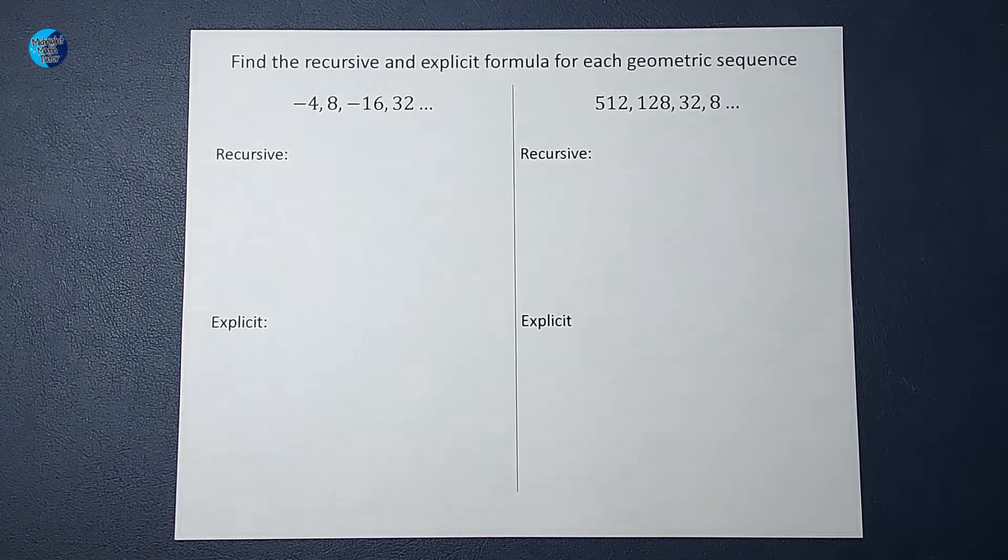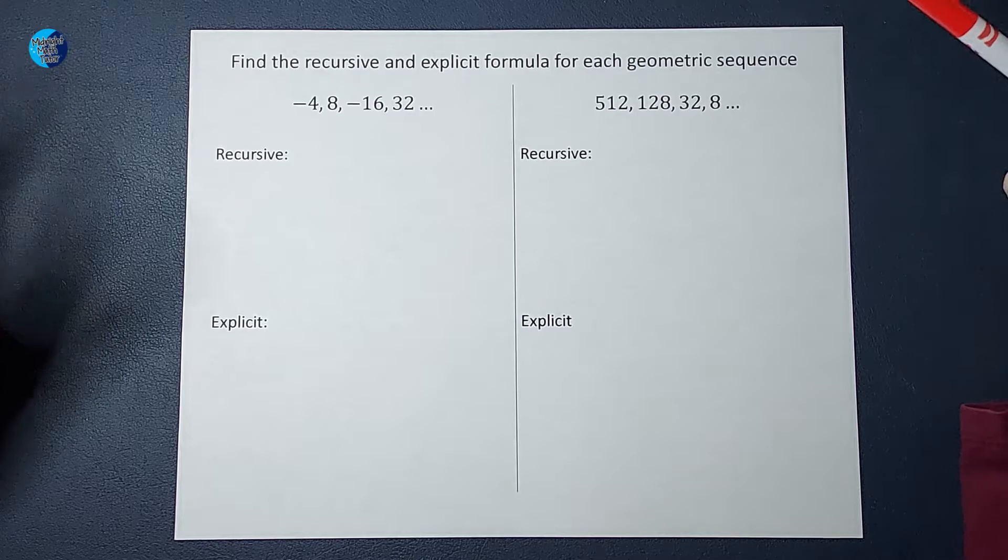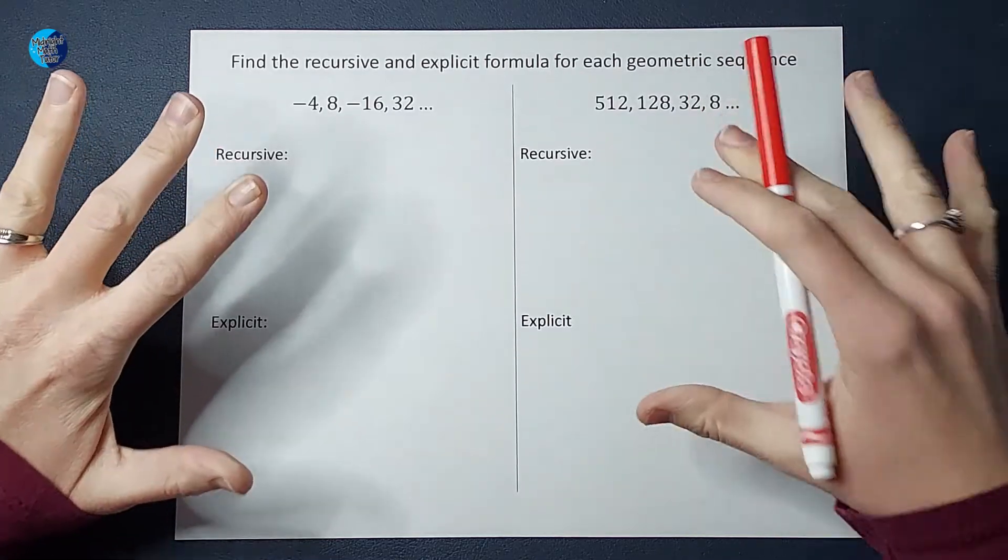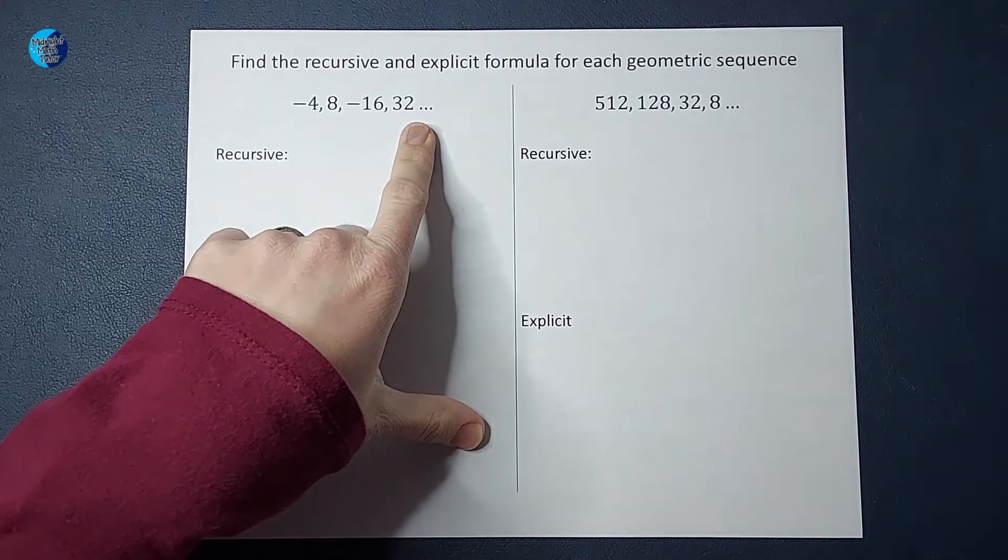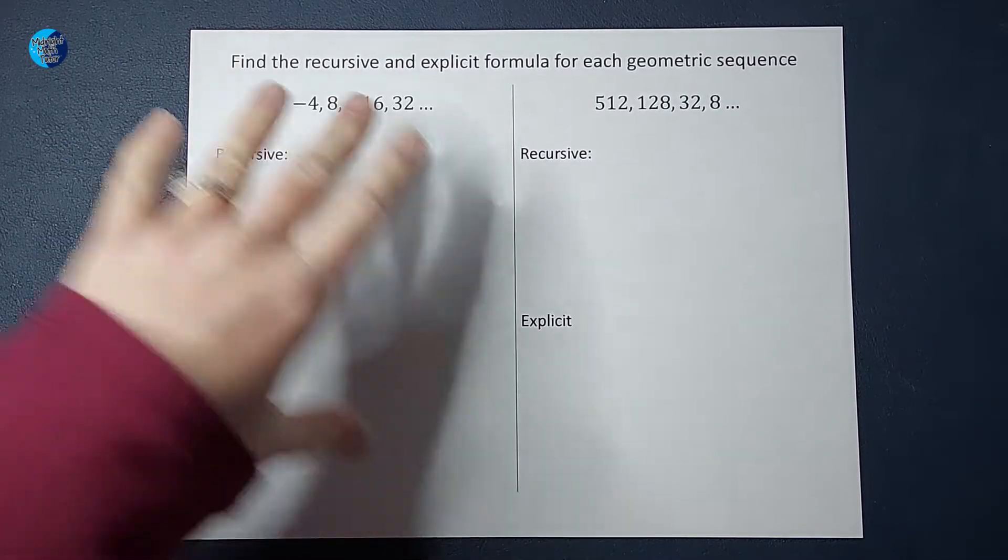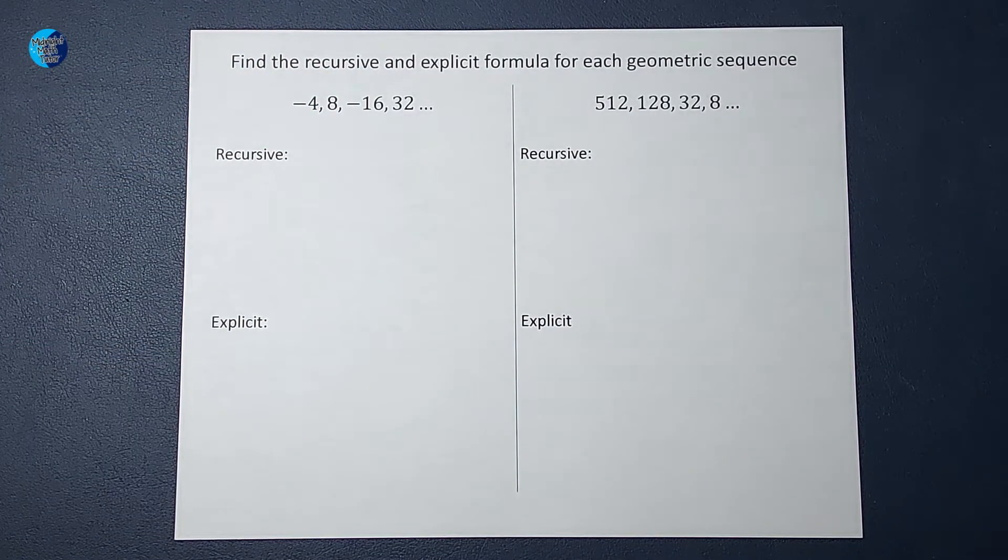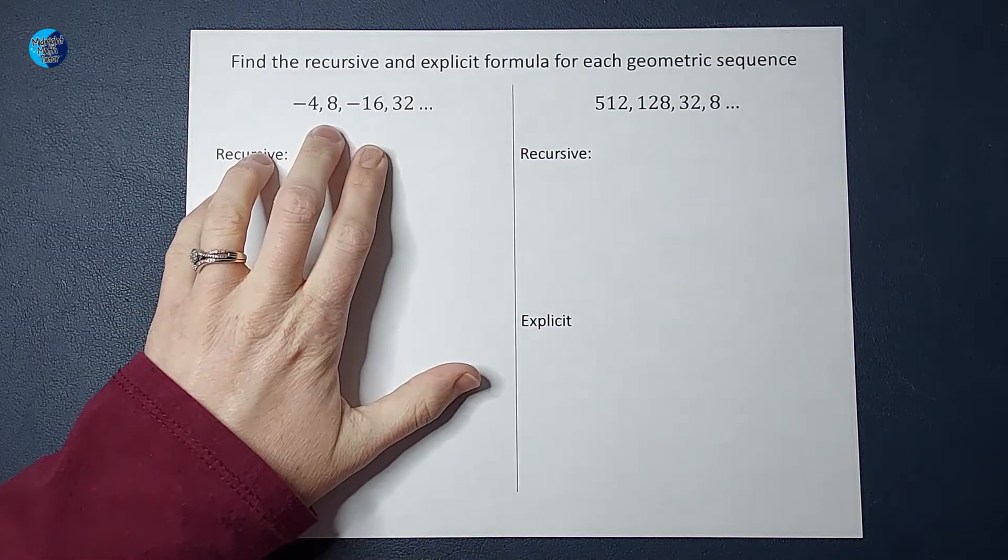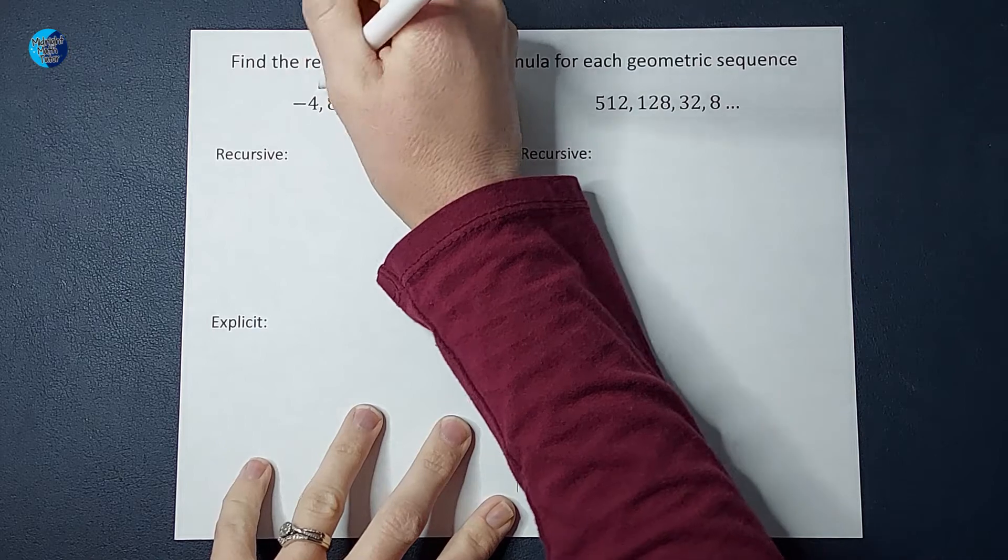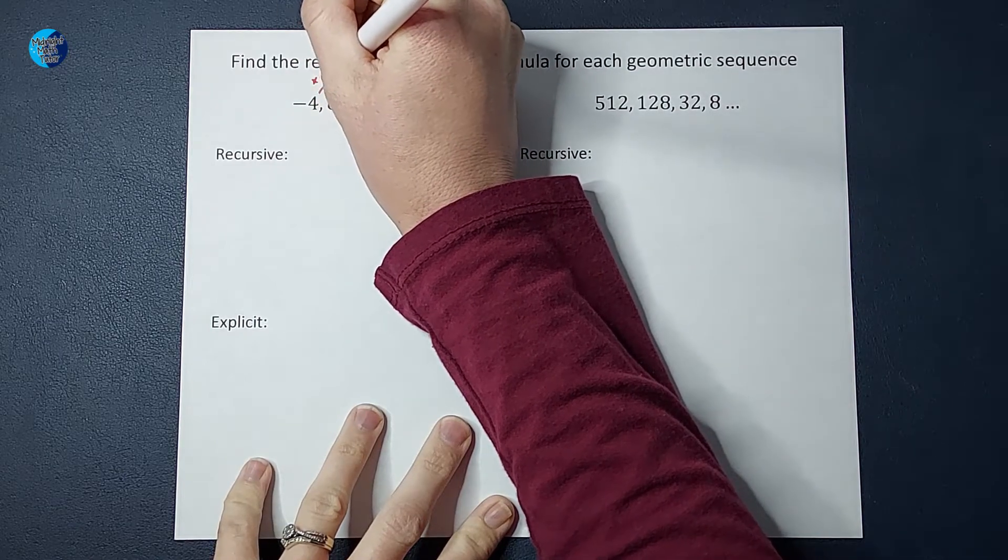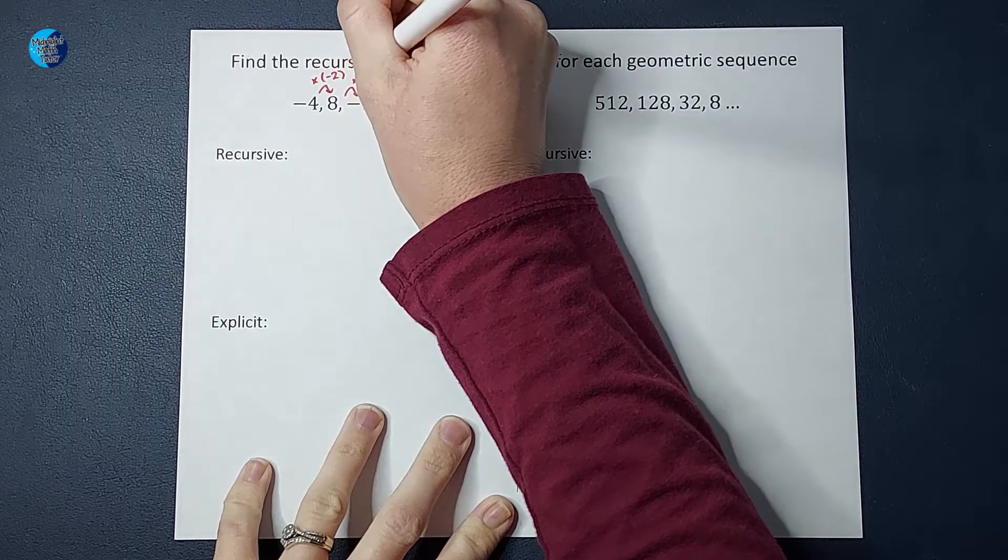The purpose of the recursive and explicit formulas is to find more numbers in these sequences. This dot dot dot means that this sequence continues on. These formulas help us find more numbers in the sequence. The first thing I'm going to do is figure out the pattern. These are a sequence because there's something happening to these numbers. When I look at this, I recognize that we are multiplying by a negative two each time.